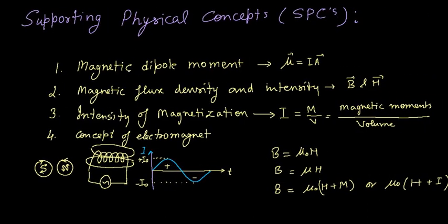The first supporting physical concept is the magnetic dipole moment. This information should be very clear to understand the magnetic material chapter. The formula is μ = I·A, where μ is a vector quantity, I is the current, and A is the area of the current loop.